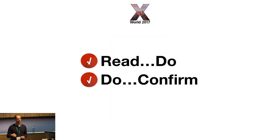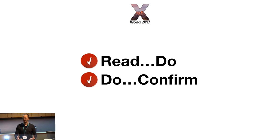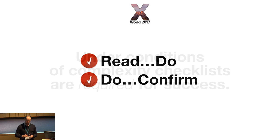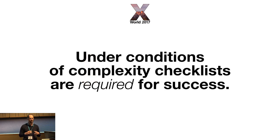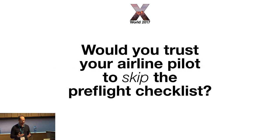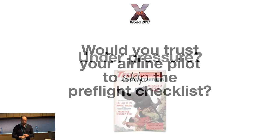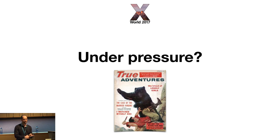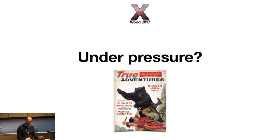There are two types of checklists. There's those that you read and you do — those are the kind I need. I tell my team: I should be able to sit down and go through this checklist and know what to do. Then there's the do-confirm: you know what you're doing, just confirm it before you leave the client, before you finish the job, to make sure you've done it all. Under conditions of complexity, checklists are required for success. Would you trust your airline pilot to skip the preflight checklist? I don't think any of us would. In a wilderness survival class, when I was under pressure it was very difficult to mentally go through that checklist — without a lot of practice, a lot of people can't do it. So when you're under pressure, your brain starts to melt down even more. Refer to the checklist, remain calm, all's good.